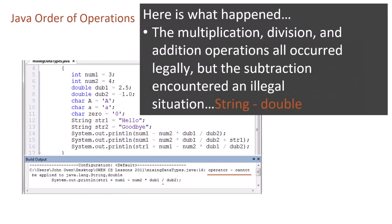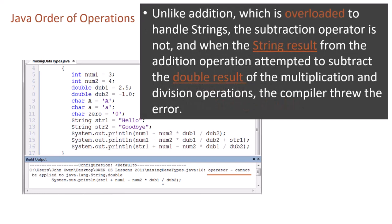Here is what happened. The multiplication, division, and addition operations all occurred legally, but the subtraction operation encountered an illegal situation: string minus double.